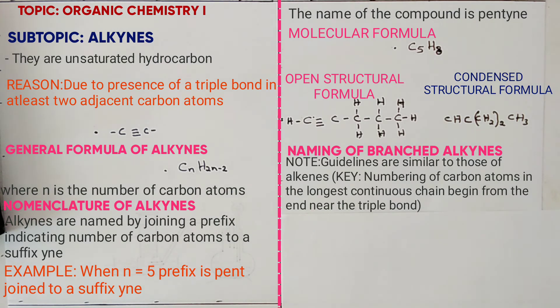For example, if you have methyl, bromo, and chloro branches, you name them alphabetically: bromo, then chloro, then methyl. Also, do not use capital letters between names.